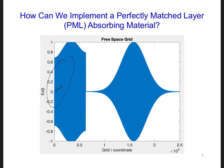Take a minute and make a list of the things that you think you need to add or change to your existing one-dimensional Maxwell's equations code in order to implement an absorbing boundary on the left side of your grid. Be as detailed as you can. When you're done, we'll compare your list with mine.